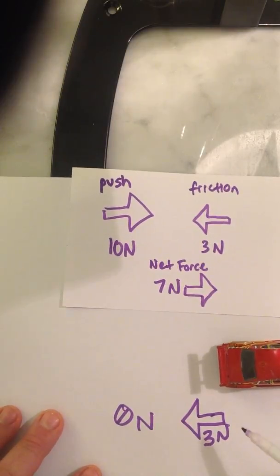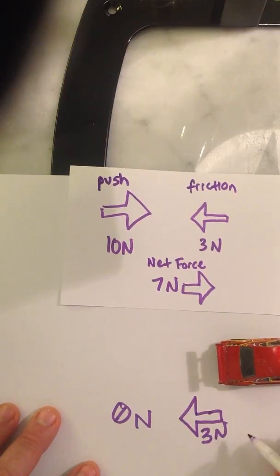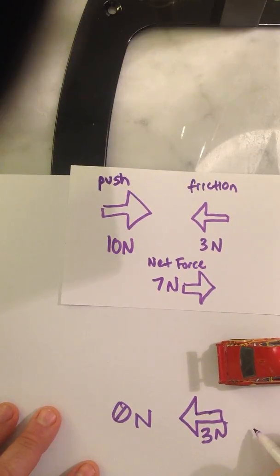Once the car stops moving altogether, then friction no longer exists either because the car is not moving and therefore friction becomes 0 newtons as well. And that's why the car remains at rest.